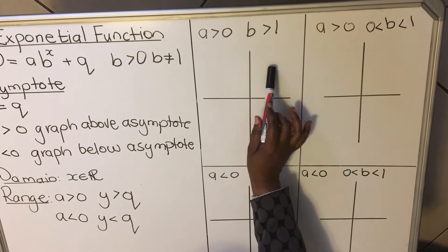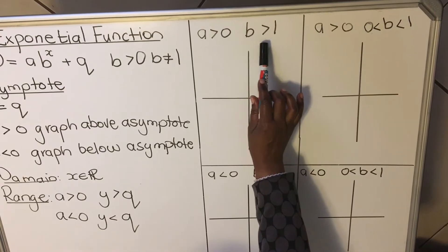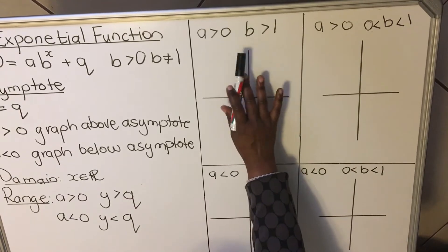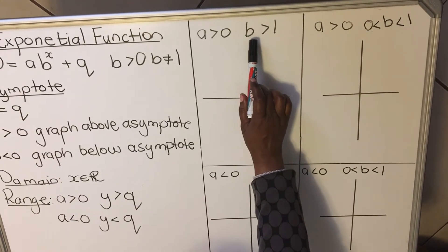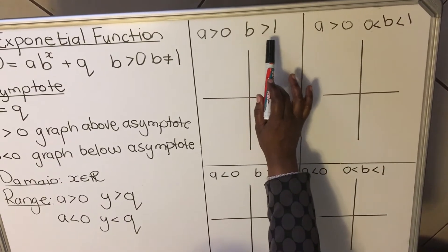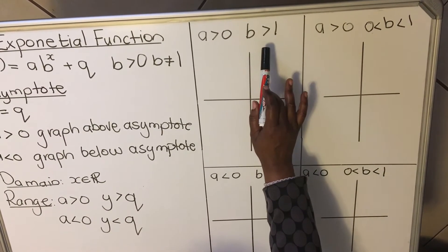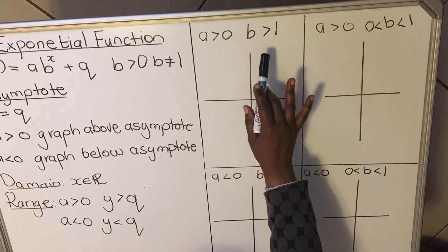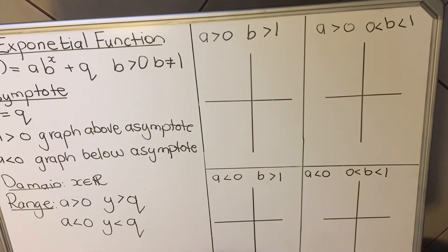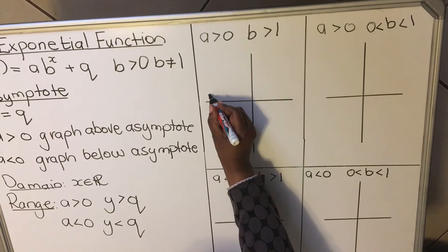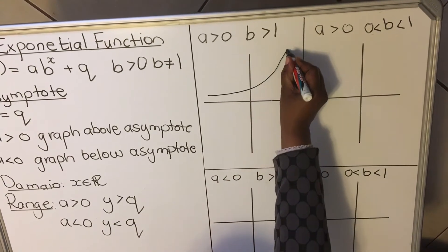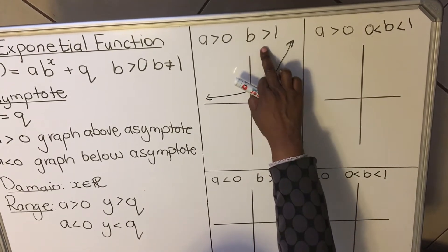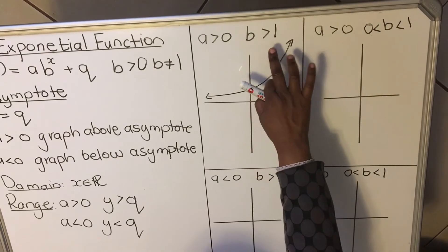Here a is positive, so the graph will be above the asymptote — somewhere here. When B is greater than 1, meaning B is a whole number and not a fraction, your graph will be above. In the second quadrant your graph will be closer to the asymptote, and in the first quadrant it will go away from the asymptote. This happens when B is greater than 1 — when B is 2, 3, or 4.